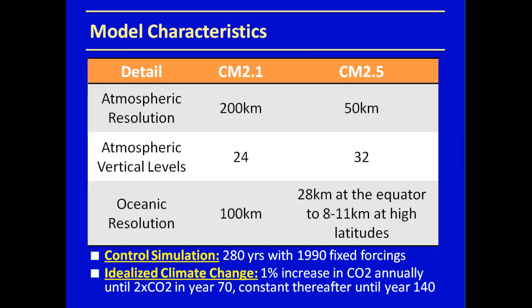We're using two models: CM2.1 and CM2.5. CM2.1 has 200-kilometer resolution, 24 atmospheric vertical levels, and an ocean resolution of 100 kilometers. CM2.5 has 50-kilometer resolution, 32 vertical levels, and a mixed ocean resolution of 28 kilometers at the equator to 8–11 kilometers at high latitudes. We have two sets of simulations: a control simulation of 280 years with 1990 fixed greenhouse gas forcing, and an idealized climate change simulation where we've increased atmospheric CO2 by 1% annually until CO2 doubles in year 70 and then remains constant.